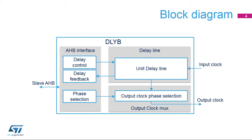The Delay Block Module consists of 12 delay units with programmable unit delays. The delay line feedback information is used to tune the delay line to one period of the input clock. The output clock phase is selected by the phase selection register.